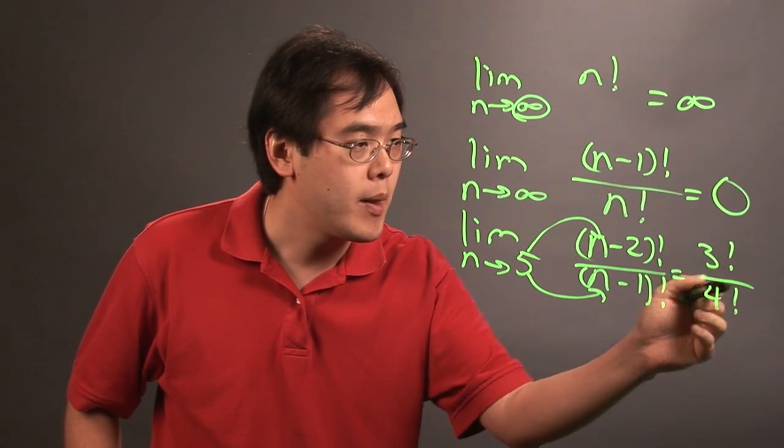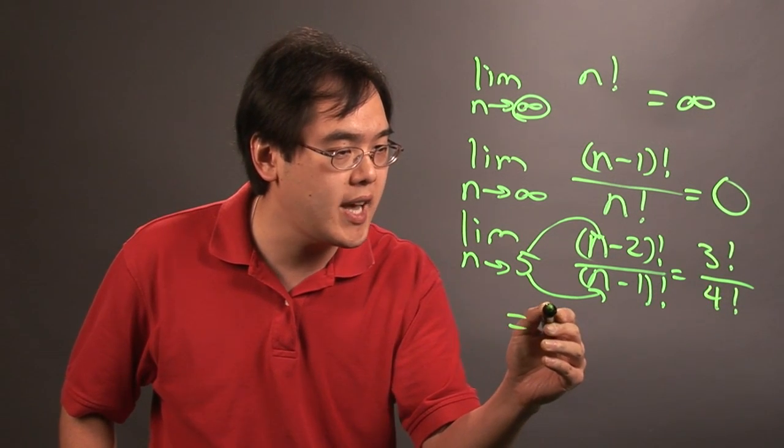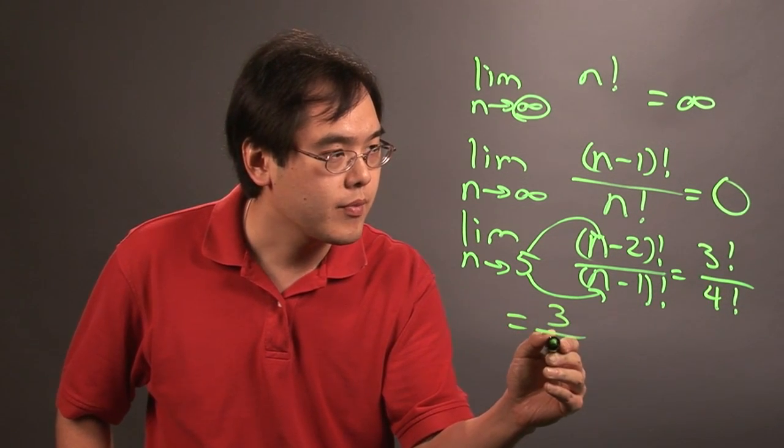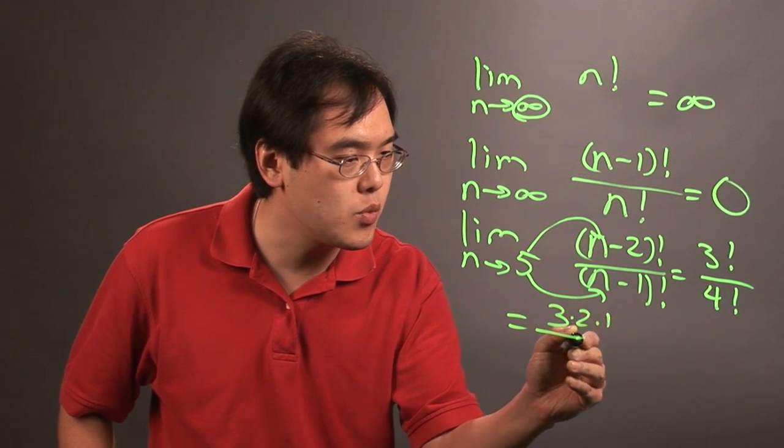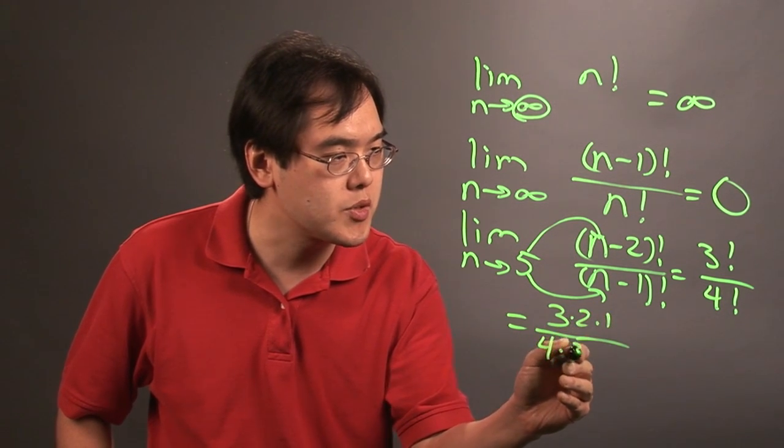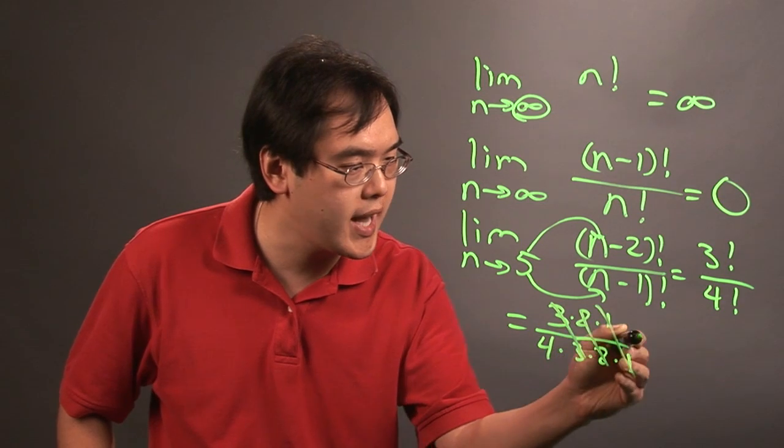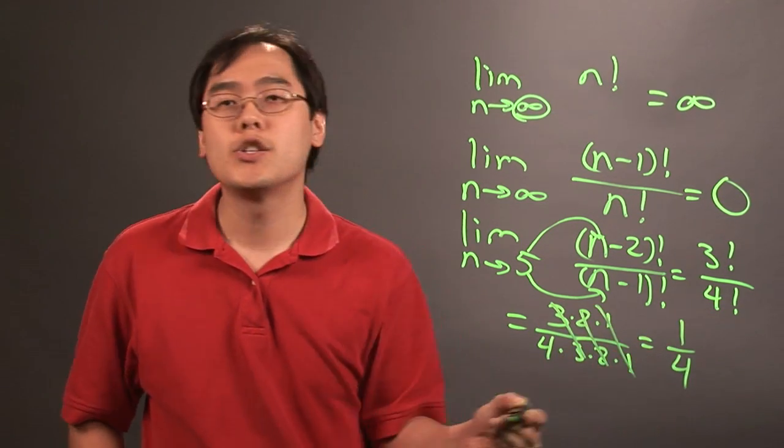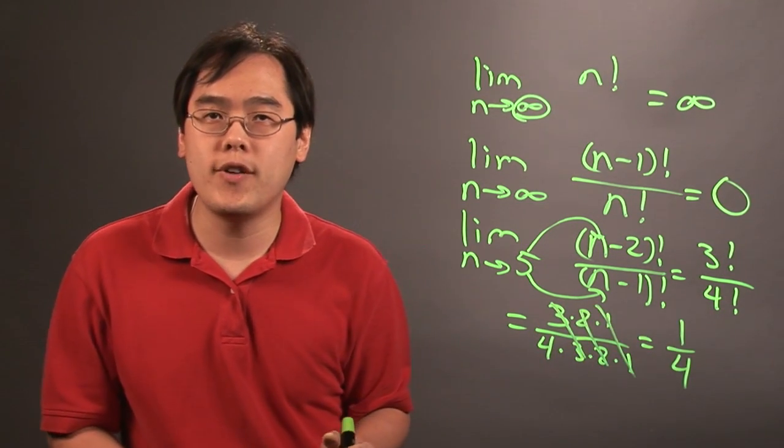And what that allows you to do is expand the factorial. But at the end of the day, you'll have 3 times 2 times 1 over 4 times 3 times 2 times 1. The 3's, 2's, and 1's cancel, so you're left with 1 fourth.